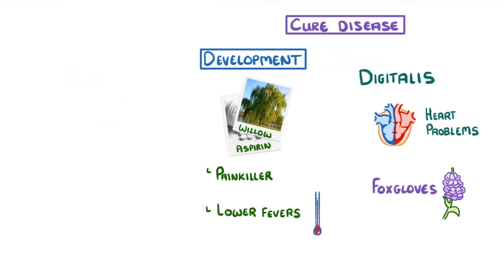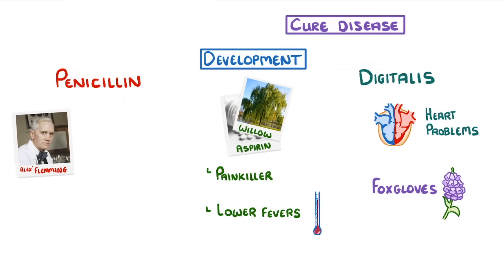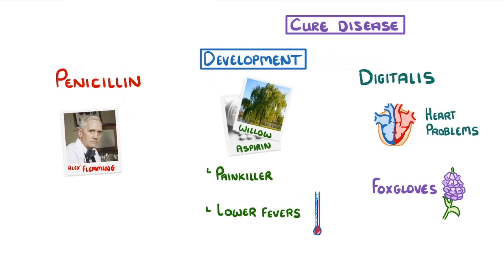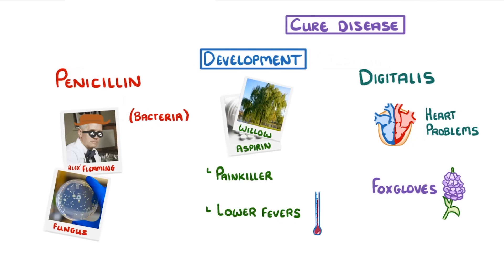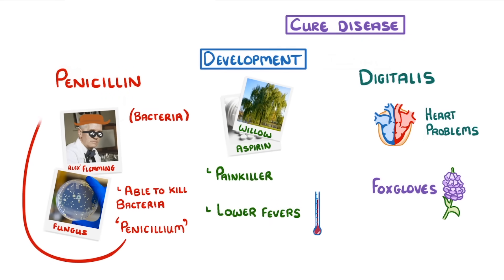The most famous example, though, is the origin of penicillin. Alexander Fleming was a microbiologist who studied bacteria. One time, when he returned to his lab after a holiday, he noticed that a fungus was growing in one of his petri dishes, and oddly it had killed the surrounding colonies of bacteria. After investigating, he found that the fungus produced a substance that was able to kill the bacteria. And because the genus of fungus was penicillium, he named the substance penicillin. And that's how we got our first and most widely used antibiotic.